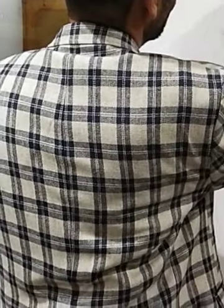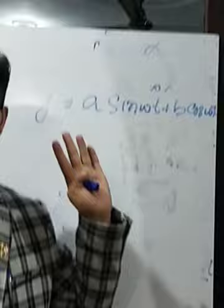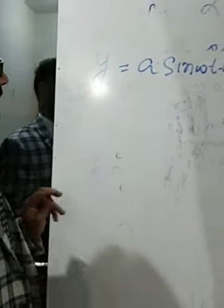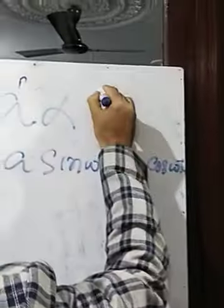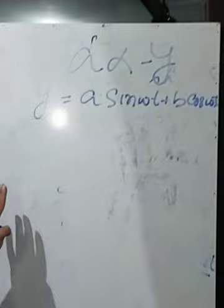Another very important example: y = A sin(ωt) + B cos(ωt). We check whether this motion is simple harmonic or not. Again, by the definition, if acceleration is directly proportional to displacement with a negative sign, you can call it simple harmonic motion. So I differentiate.